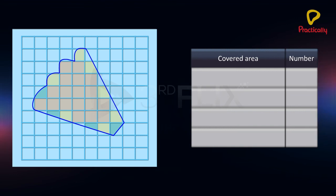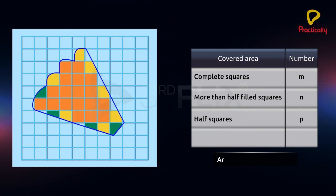If the given figure encloses m complete squares, n more than half squares, and p exactly half squares, then area of the given figure equals to m plus n plus p by 2 square centimeters.